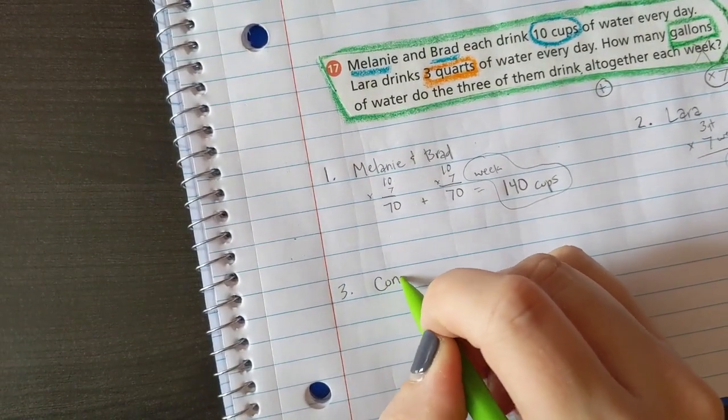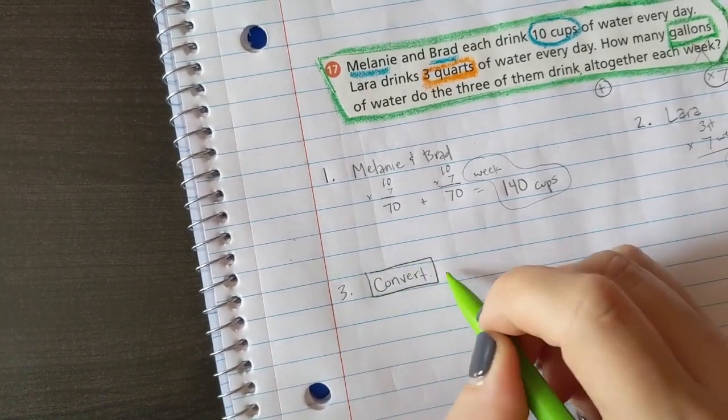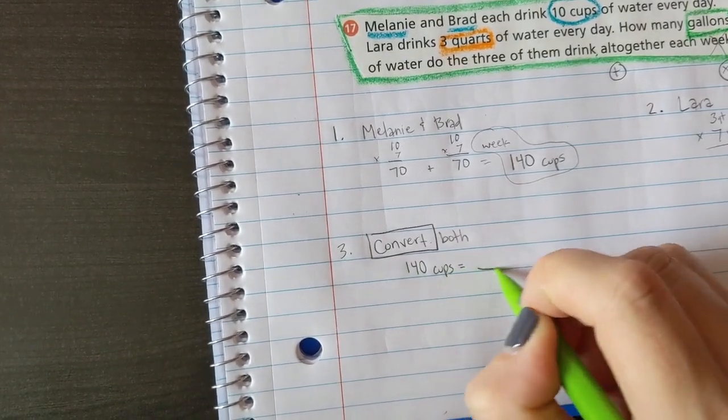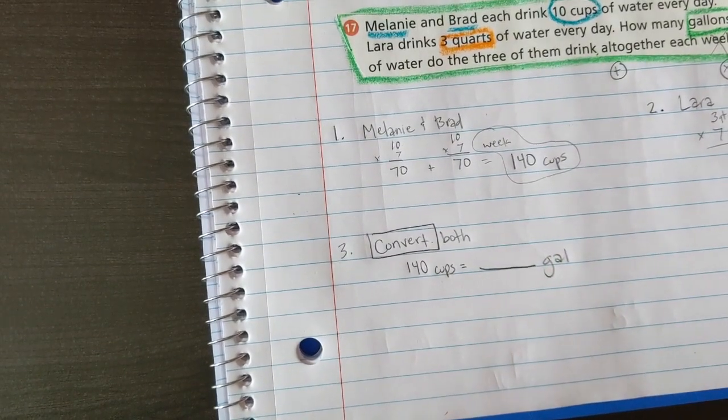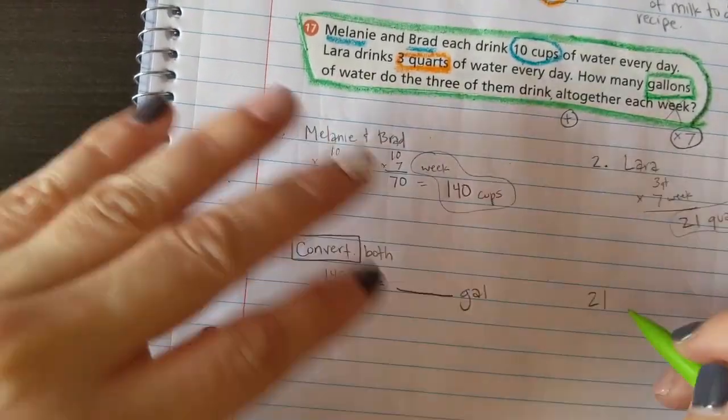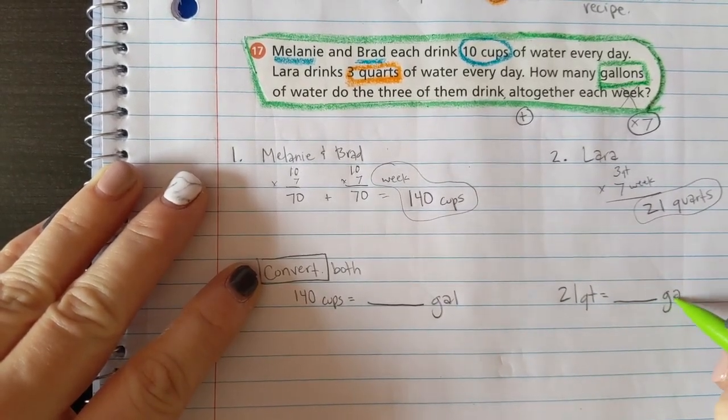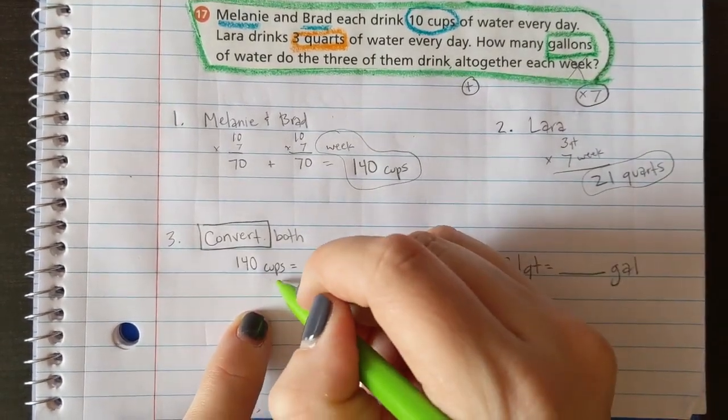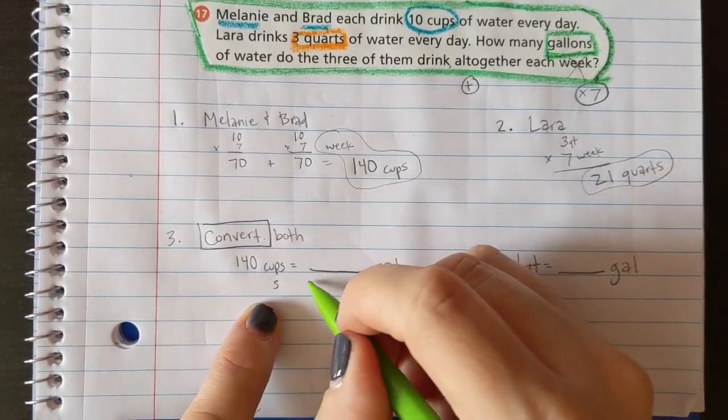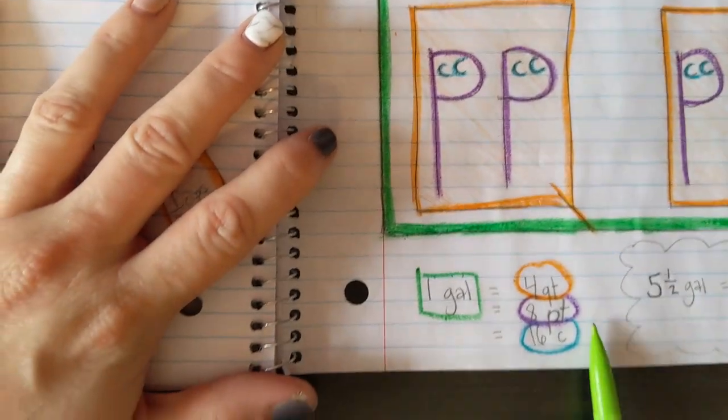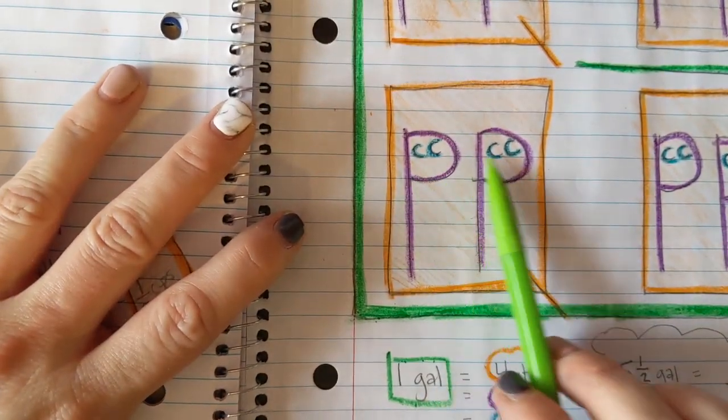Step three is to convert - I guess we better write 'convert both'. We're converting both, so we're gonna do 140 cups is how many gallons, everyone ready? And we're also gonna convert 21 quarts into gallons as well, so we're gonna convert both of those. Cups into gallons, something small into something large, so Stella likes doughnuts. I will divide the connecting number between cups and gallons.